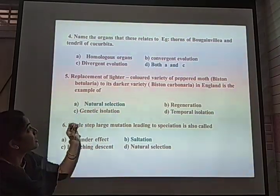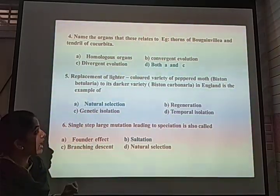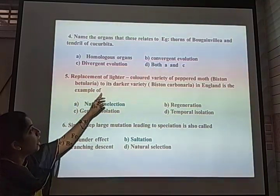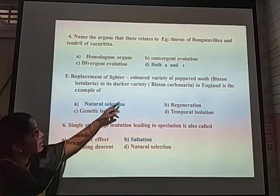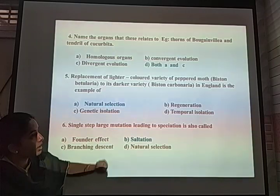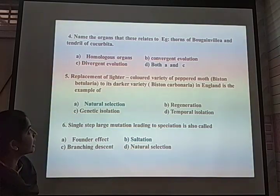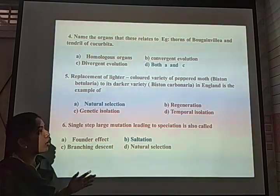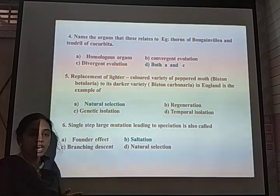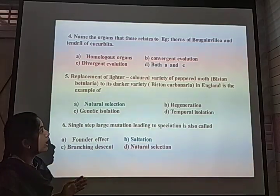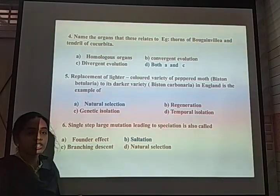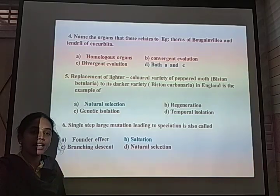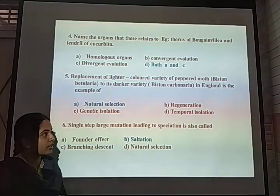Next MCQ: Replacement of the lighter-colored variety of peppered moth, Biston betularia, by its darker variety, Biston carbonaria, in England is an example of what? This is the industrial melanism example from before and after industrialization. The answer is natural selection.